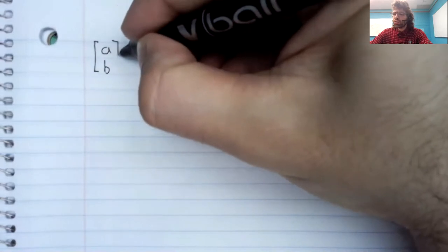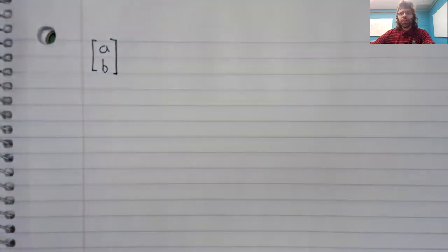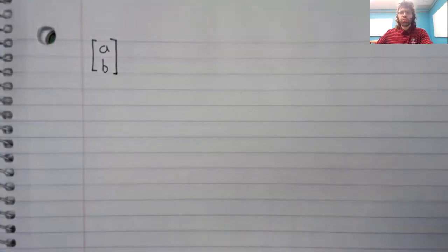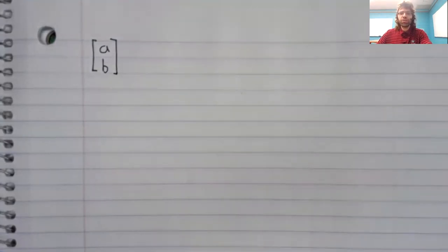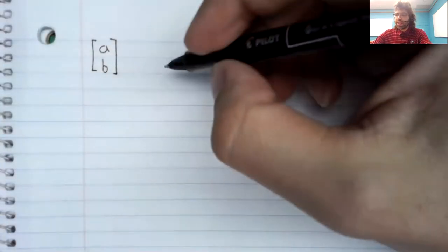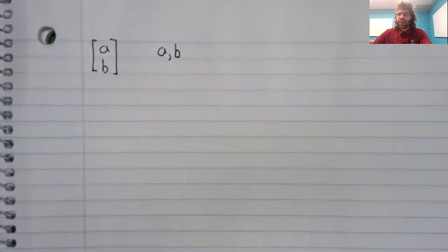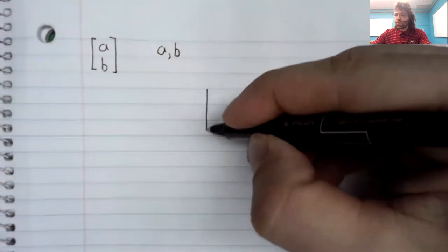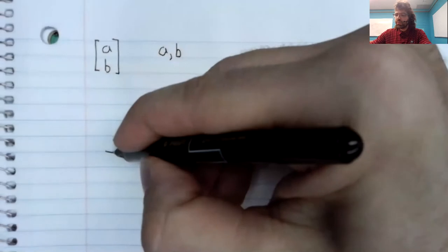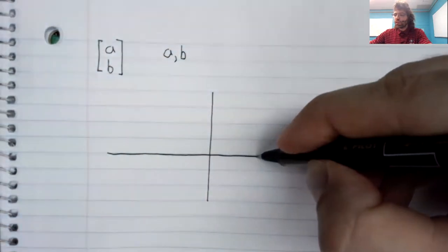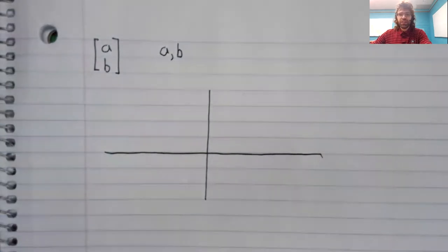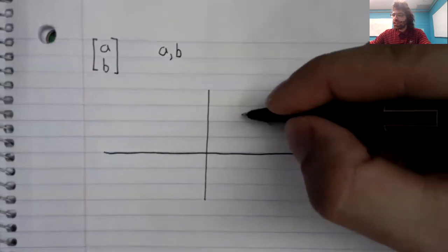How do we graph a vector in R2? The key observation is that a vector in R2 is just a list of two numbers, A, B. And if you have a list of two numbers that you want to represent graphically, we have a method of doing that, graphing on the Cartesian plane.